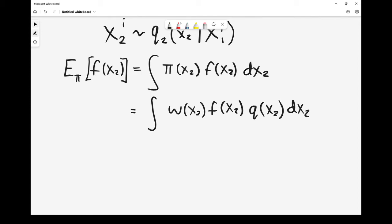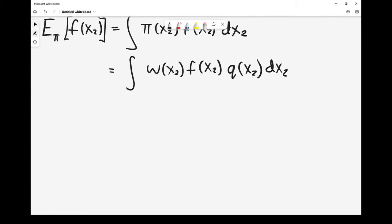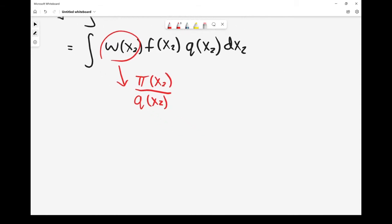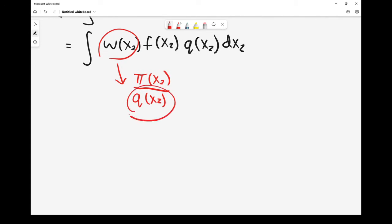As we've seen before, the importance weights will be given by target divided by proposal. So target divided by proposal. Perhaps that seems fine. But then our question is, what do we write for this?